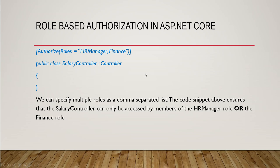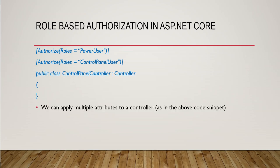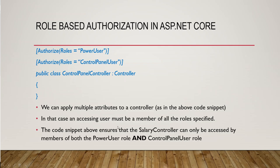We can also apply multiple attributes to a controller. Here we have Authorize with Roles as 'PowerUser' and Authorize with Roles as 'ControlPanelUser'. In this case the AND clause is in effect — an accessing user must be a member of all the roles specified. So a member must have both the PowerUser role and the ControlPanelUser role to access the ControlPanel controller.